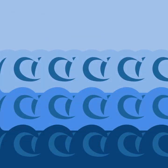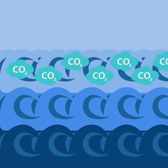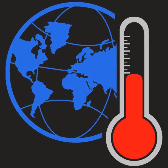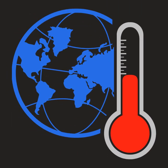Gases are not being properly circulated throughout the ocean. The ocean's top layer becomes saturated with CO2. The ocean therefore absorbs less carbon, due to the upper layer being full, and more CO2 remains in the atmosphere.